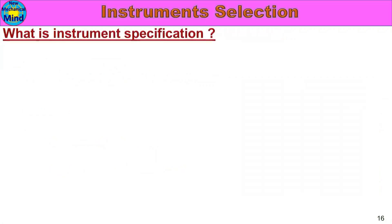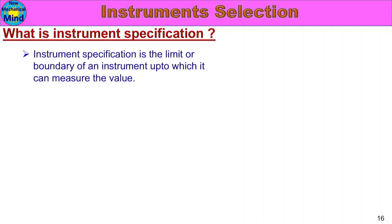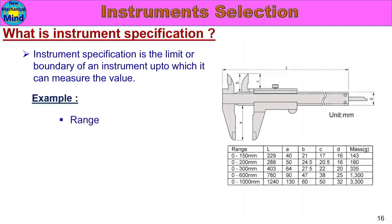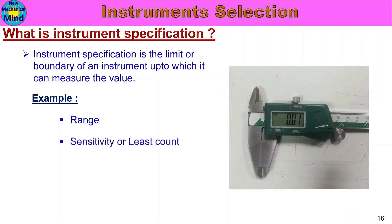Next, what is instrument specification? Instrument specification is the limit or boundary of an instrument up to which it can measure a value. The characteristics of instrument specification include: range — the maximum size an instrument can measure — and sensitivity or least count, which is the smallest value the instrument can measure.